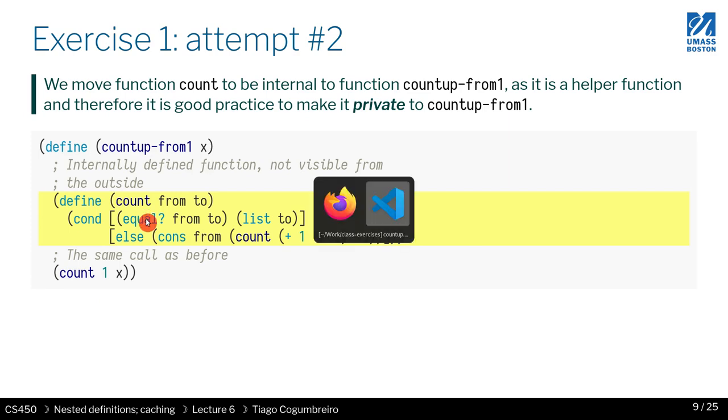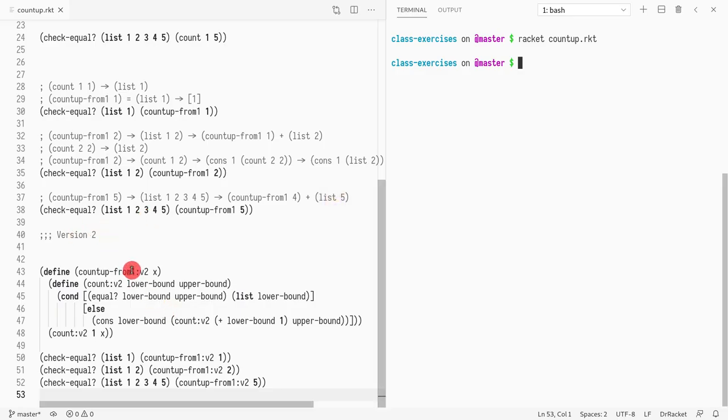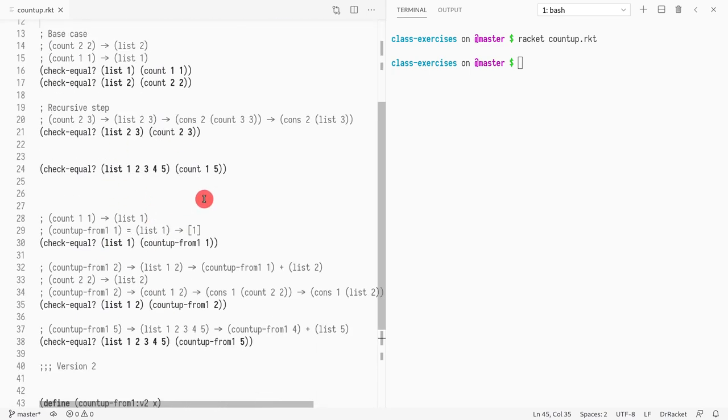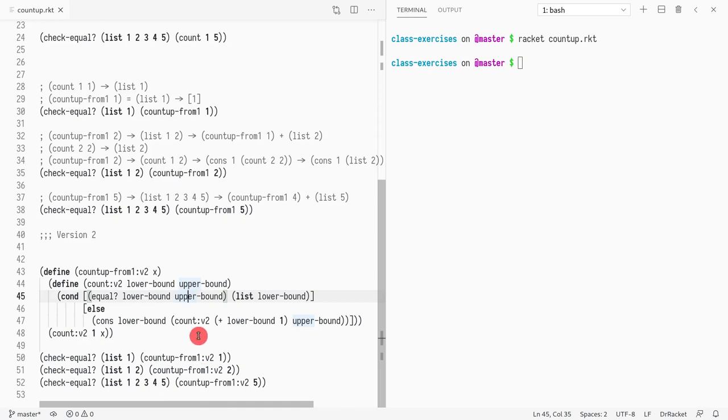So here is version two, I kind of prefixed it with colon V2. And this is just to make it different from what we had before so that you have both the version where the code is split up and the tests for each function separately. And everything combined here. One downside of hiding a function this way is that you kind of lose the ability to call it or test it.